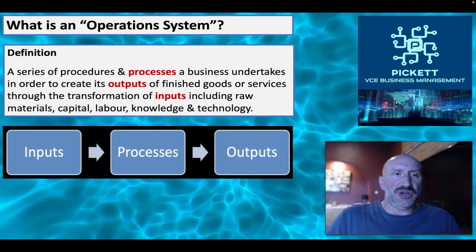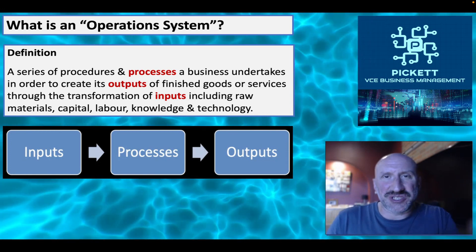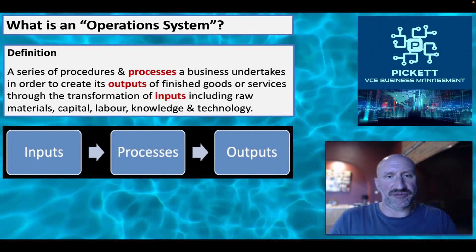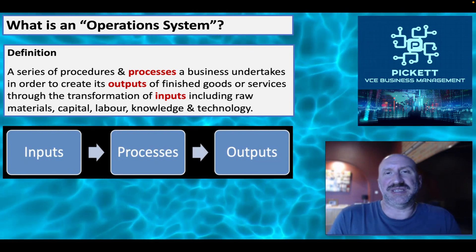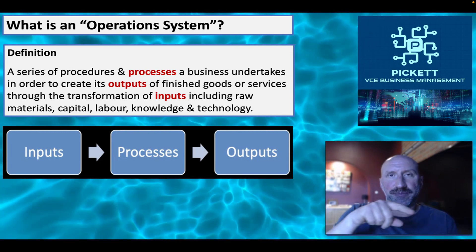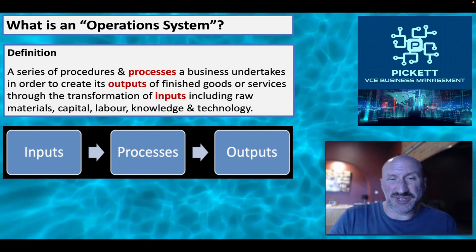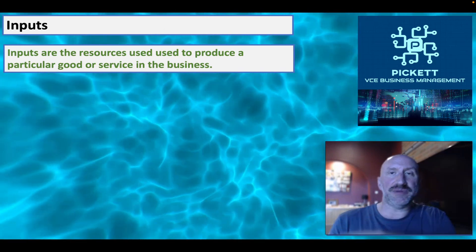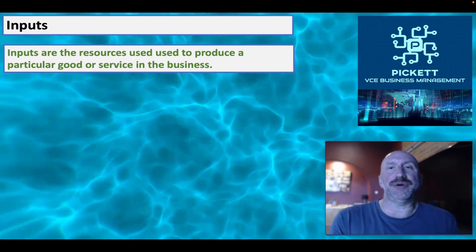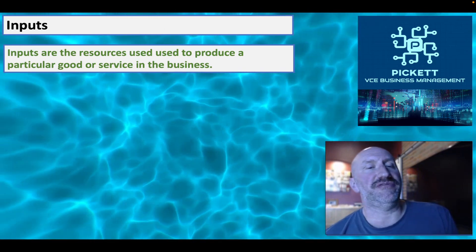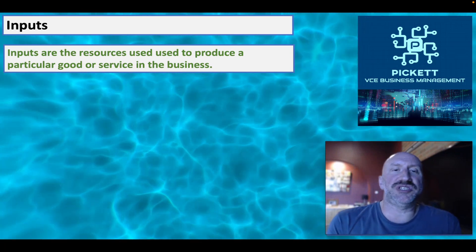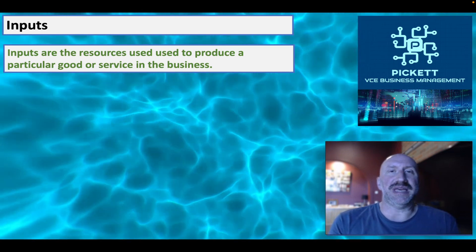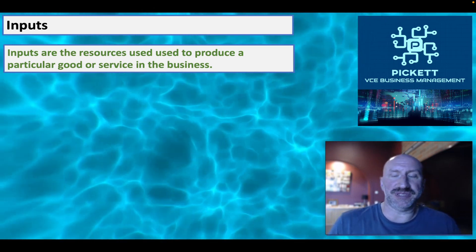So let's take them in turn. To define the operation system overall: a series of procedures and processes. That's the overall definition. Now let's take each of those three elements in turn. Inputs: the resources used to produce a particular good or service in the business. Simple as that.